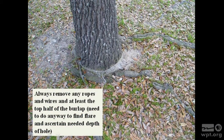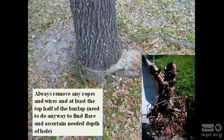Leaving the burlap on is not a great idea. It's supposed to decay, but as you can see from this picture it didn't, and it can act as a wick pulling moisture away from the root system. It was also girdling the trunk, and the tree was planted too deep because—as you can see—it has girdling roots. That's what happens when you don't remove the wire basket. A lot of places say the wire will rust away, but not soon enough. Some companies use polypropylene rope at the top that won't rot; if the planter doesn't know to remove it, that's a girdling mechanism in itself.